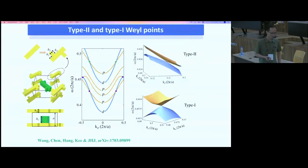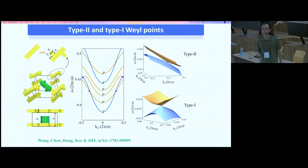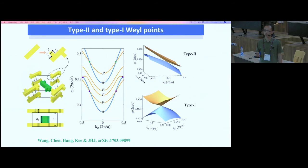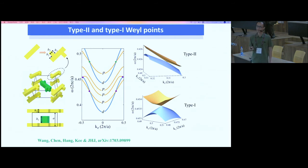If we break inversion symmetry — removing the inversion center — the double degeneracy is lifted and the Dirac point splits into two Weyl points. Each crossing between a p-band and a d-band becomes a two-fold degenerate Weyl point. In our system we have both Type-II Weyl points and Type-I Weyl points simultaneously.